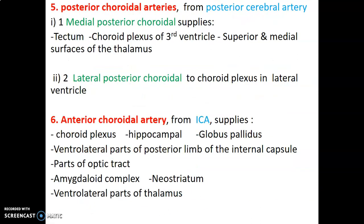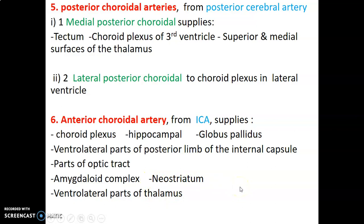We also have posterior choroidal and anterior choroidal arteries. Posterior choroidal is from the posterior cerebral artery in the vertebral basilar system. The medial posterior choroidal supplies the tectum, choroid plexus of the third ventricle, and the superior medial surfaces of the thalamus. The lateral posterior choroidal supplies the choroid plexus of the lateral ventricle. The anterior choroidal artery from the internal carotid supplies the choroid plexus, hippocampus, globus pallidus, posterior limb of internal capsule, parts of the optic tract, amygdaloid complex, ventrolateral parts of the thalamus, and the neostriatum.